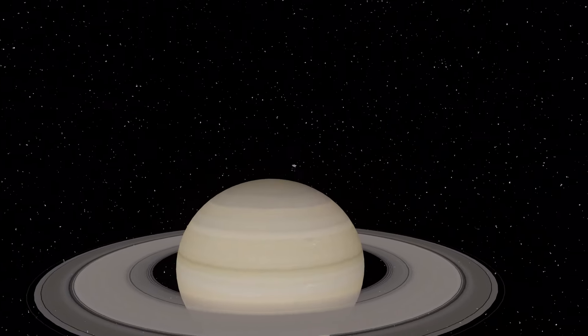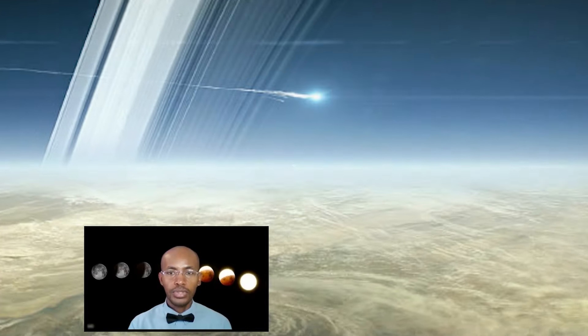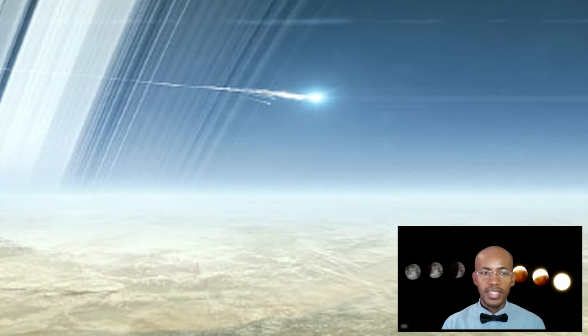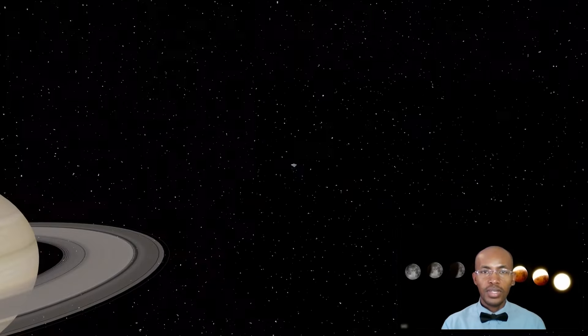Cassini studied Saturn from orbit for 13 years before its spectacular final plunge into the planet in September 2017. Cassini also carried the European Space Agency's Huygens probe, which landed on Saturn's moon Titan in 2005.